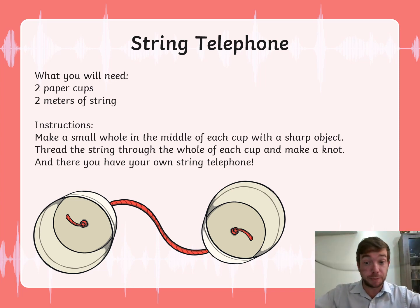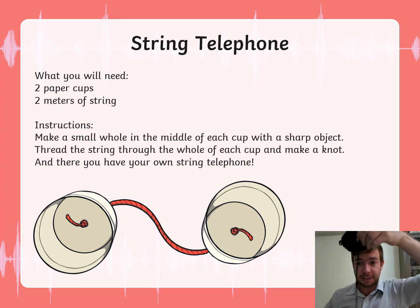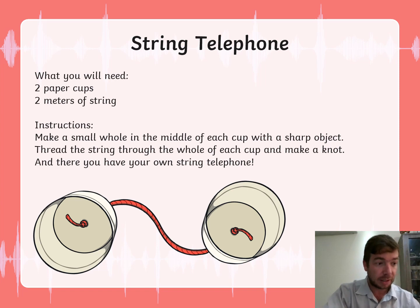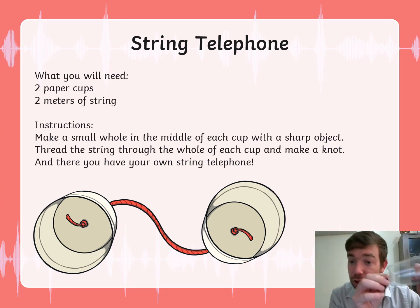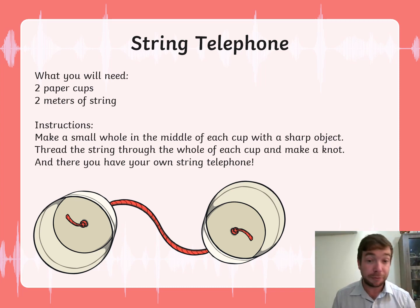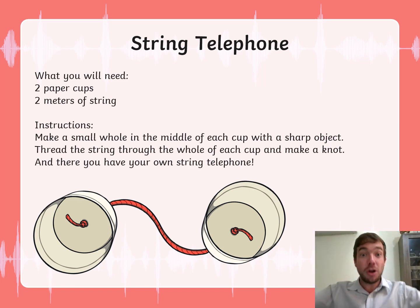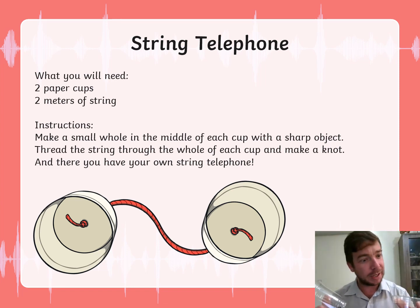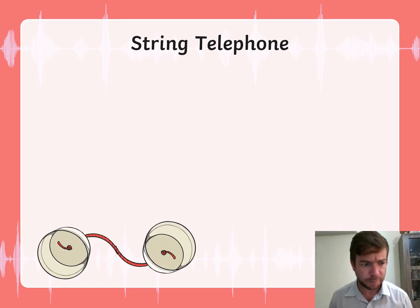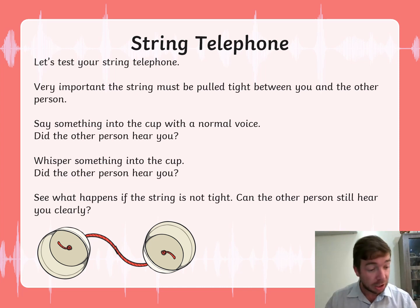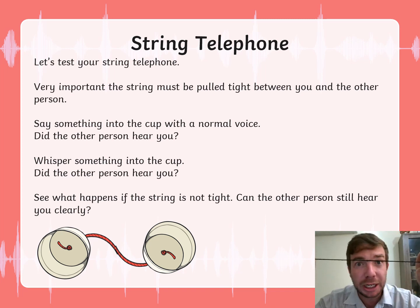Take your string — about two meters long, which is much longer than you are right now. Cut it and thread it through the little hole you made. When you do this with both cups, you'll have something like this — your own string telephone! Now what are we going to do with it? We're going to test it! Very important: your string should not be loopy, it needs to be tight — more on vibrations will come later in the unit.